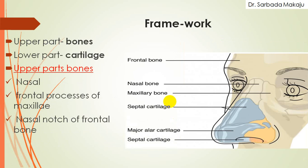Now the framework of the external part of the nose. The external part of the nose consists of bone and cartilage. The upper part consists of bone and the lower part consists of cartilage. The bone forming the upper bony part is known as the nasal bone. This bone is known as the frontal process of the maxilla. And this portion is known as the nasal notch of the frontal bone.